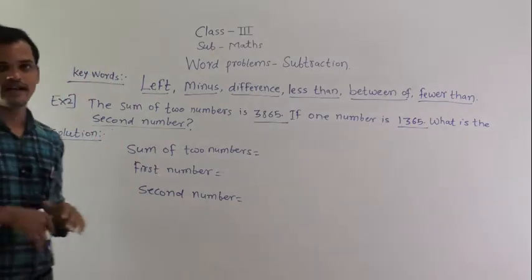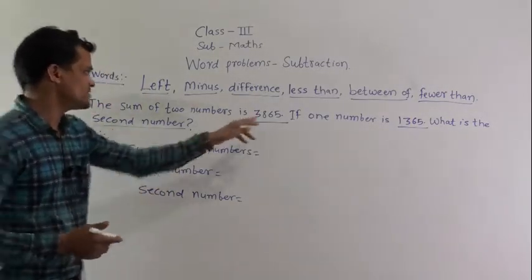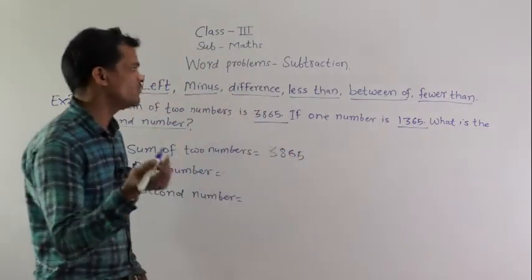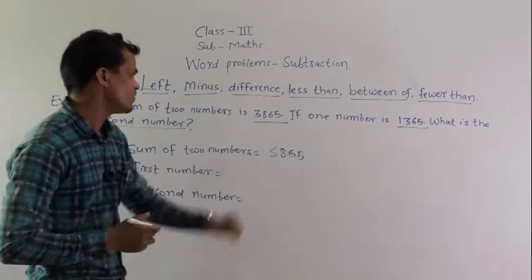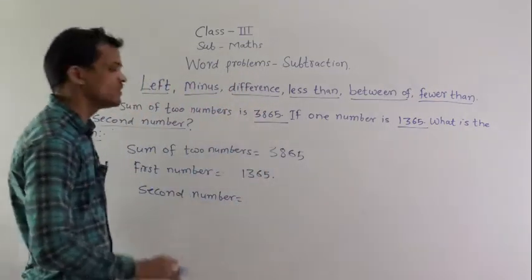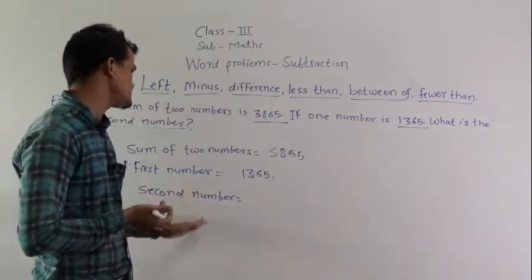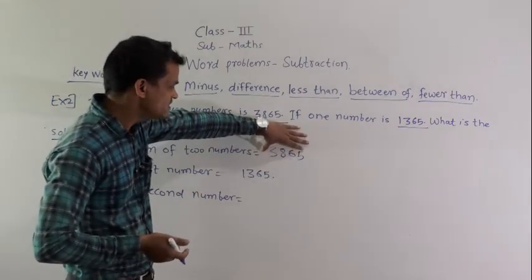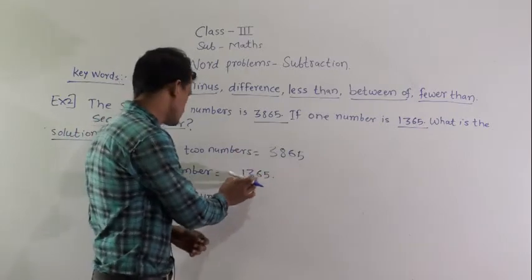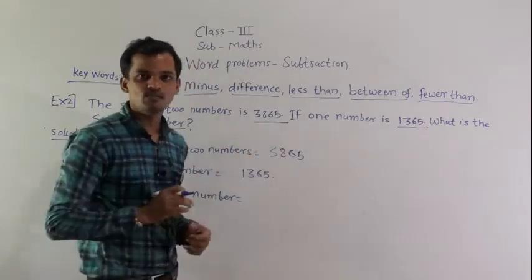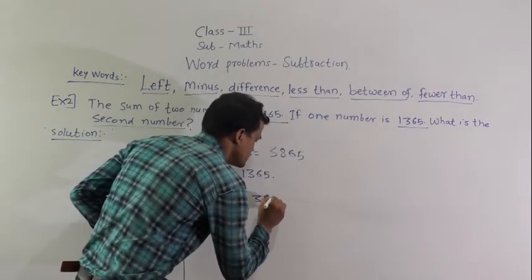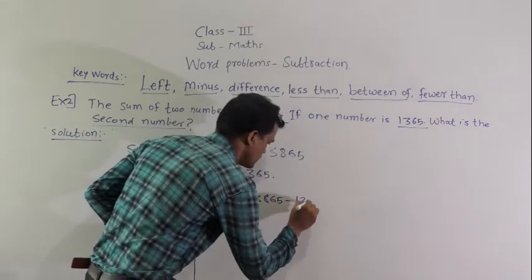Write the things that are given: sum of two numbers is 3865, and the first number is 1365. We have to find the second number. The sum minus the first number gives the second number. So write: 3865 minus 1365.